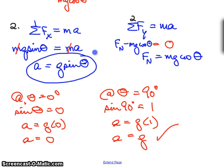And that makes sense to us because the object's falling straight down. But that's the physics behind the very simple case of an object going down a frictionless incline.